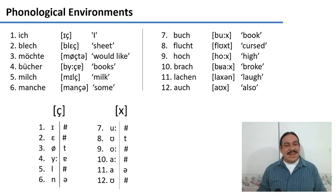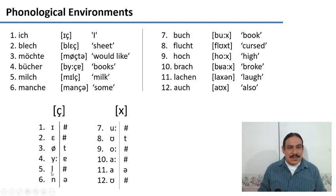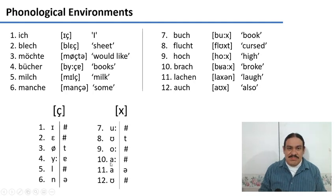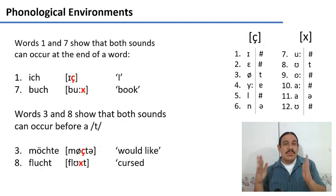You should have something like this. For example, in word five, milch, you find that the palatal fricative is preceded by the consonant L and followed by the edge of the word. We have words like number eleven, lachen, where we find the velar fricative preceded by the vowel A and followed by the vowel schwa. So once we have the environments, we need to figure out what's happening with them — are these two sounds in complementary distribution or not?